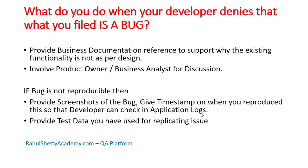Another scenario is where the developer denies the bug saying they cannot reproduce it on their screen. If the bug is not reproducible and works fine on their machine, that is a little challenging. At that time you have to provide proper screenshots of that bug, and more importantly you have to give a timestamp — the exact time and second you saw the issue — so the developer can open application logs and see what happened at that particular timestamp. You should also provide the test data you used for replicating the issue.